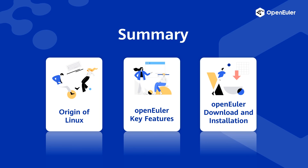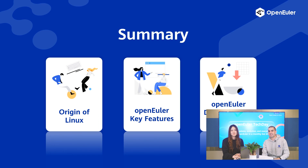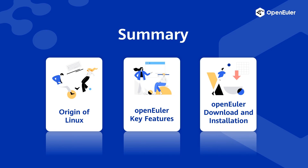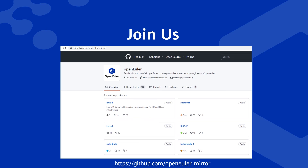Now we've gone through the entire process of Open Euler download and installation. We've learned the origins of Linux and the key features in Open Euler, and went through the detailed steps for downloading and installing Open Euler. If you want to know more and engage in community contributions, please visit our GitHub repo. We can't wait to see you in the Open Euler community. In the next episode of Open Euler Tech Day, we'll go into more details about Open Euler key features and practices. Stay tuned — that's all for today!